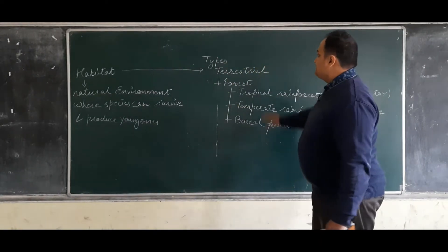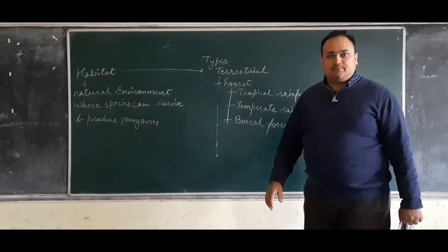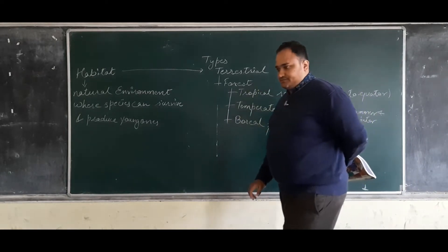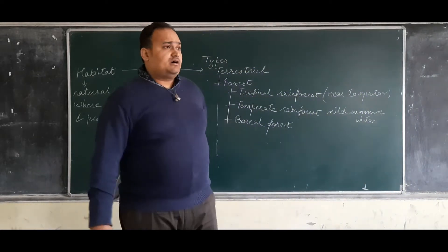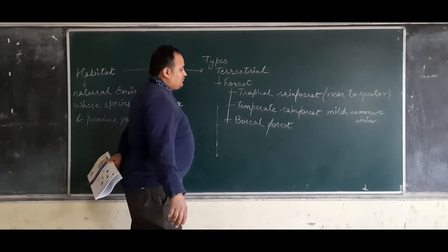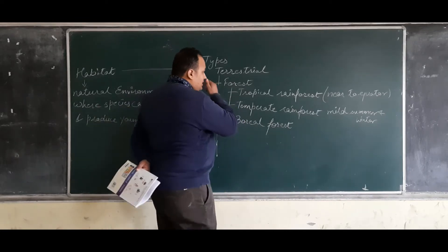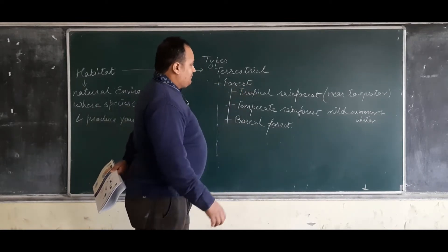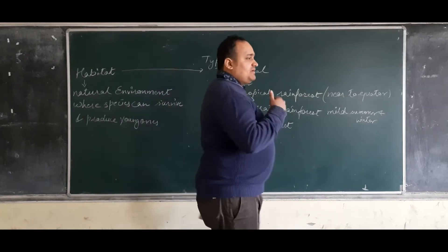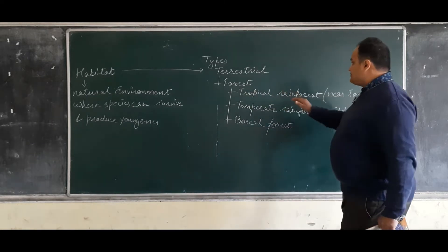After habitat, the next thing is types of habitat. Types of habitat - first is terrestrial habitat. When we are dealing with terrestrial habitat, we are talking about forests. Forests are generally described in three types: tropical rainforest, temperate rainforest, and boreal forest.